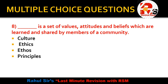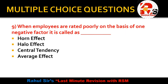Question number 8: Dash is a set of values, attitudes, and beliefs which are learned and shared by members of a community. The options are: Culture, Ethics, Ethos, or Principles. The right answer is Culture. Culture is a set of values, attitudes, and beliefs — when we combine these things, we call it culture.